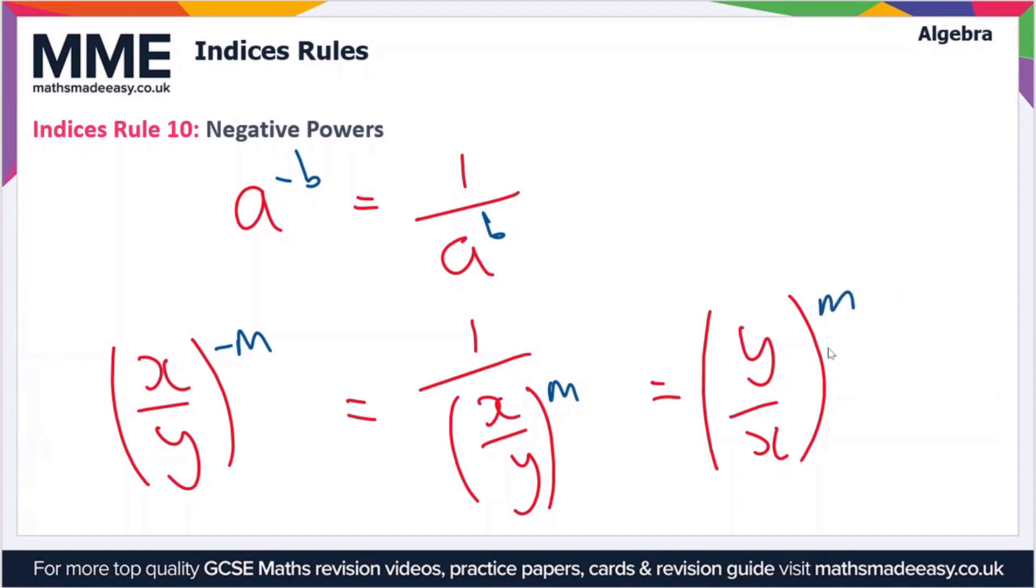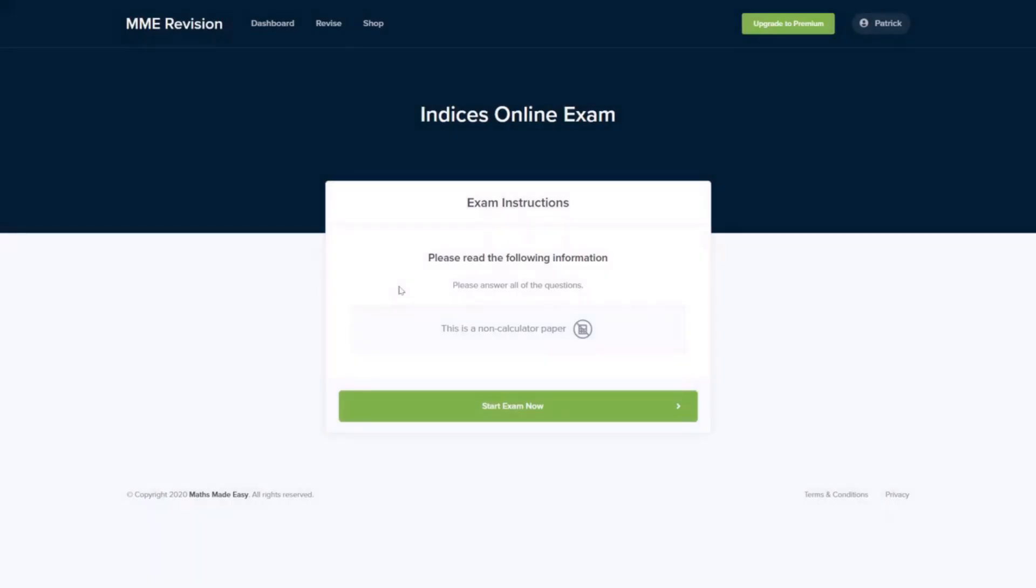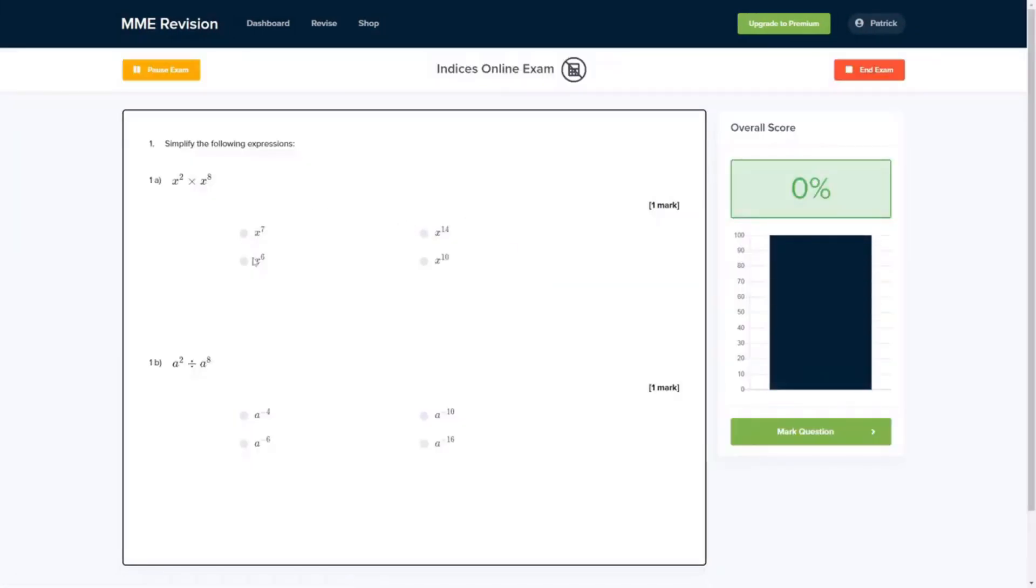That's about it for this video. If you're feeling ready to get some practice in, you can do so with our online exam. This is available through our revision platform, and if you take the test you'll find loads of different questions to have a go at, all of which are instantly marked so you get feedback straight away, allowing you to work out where you're going wrong and where you can improve. If you're interested, you can click the link below and it'll take you straight over there.